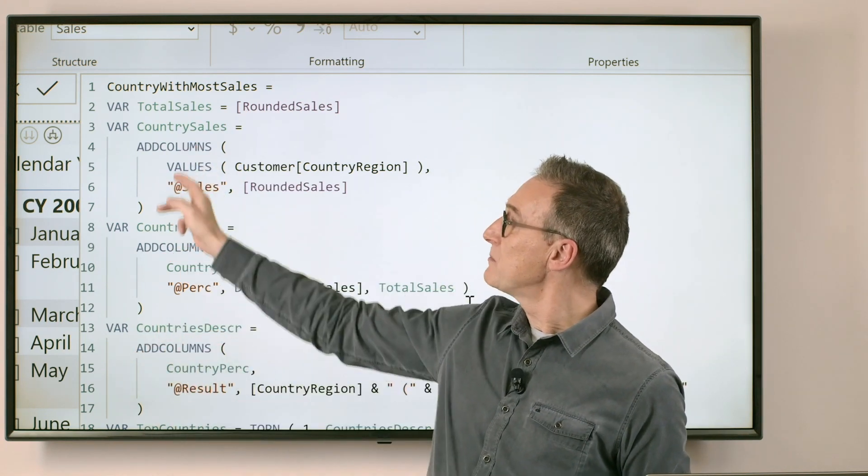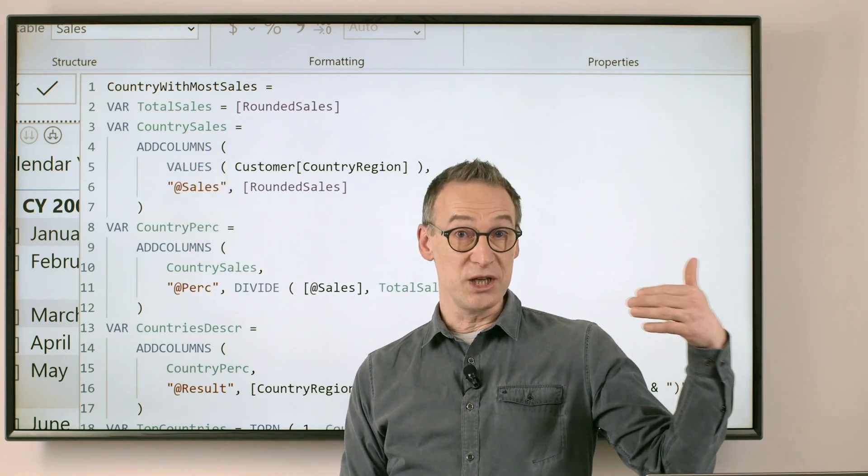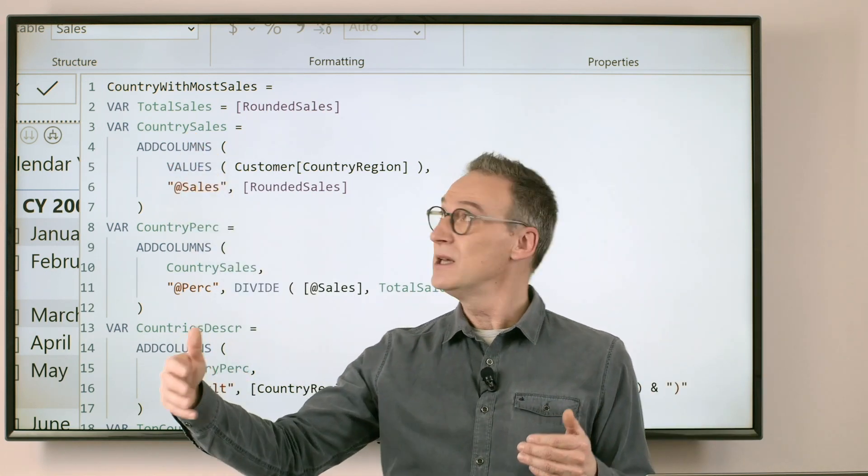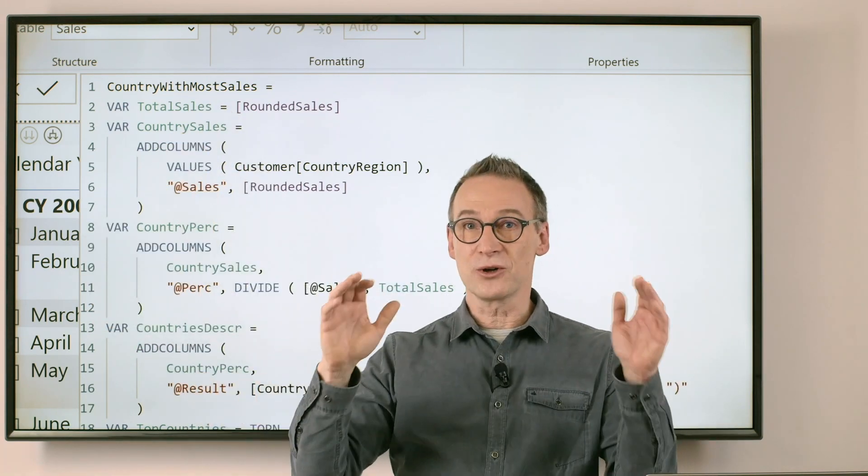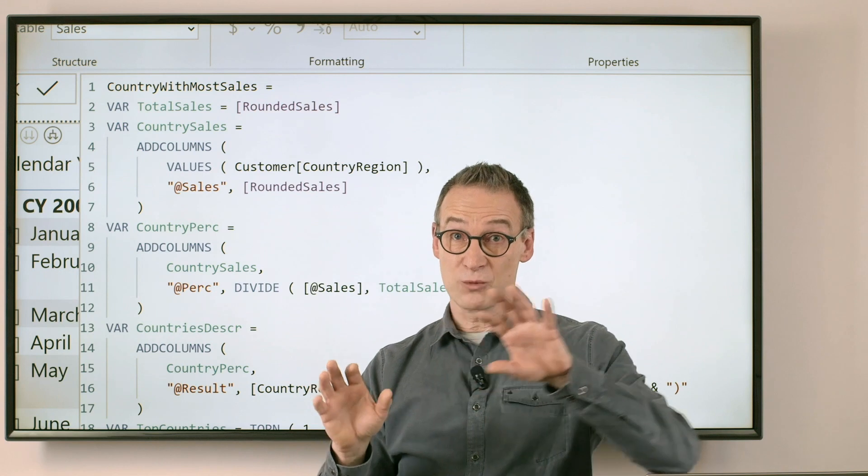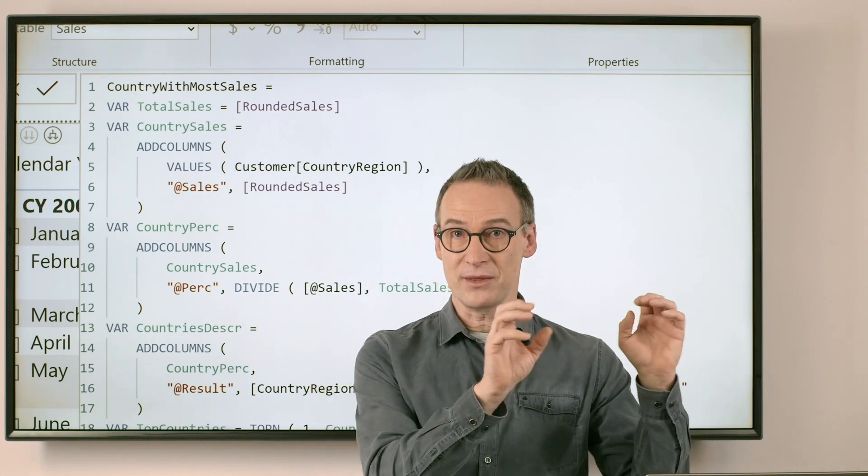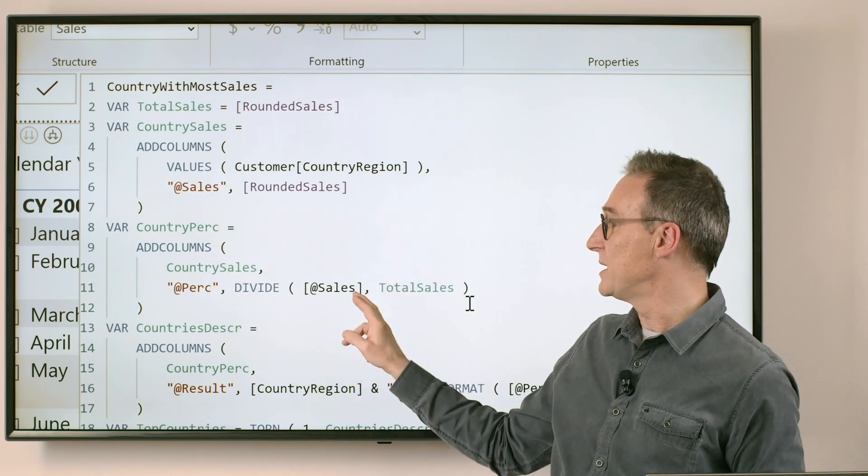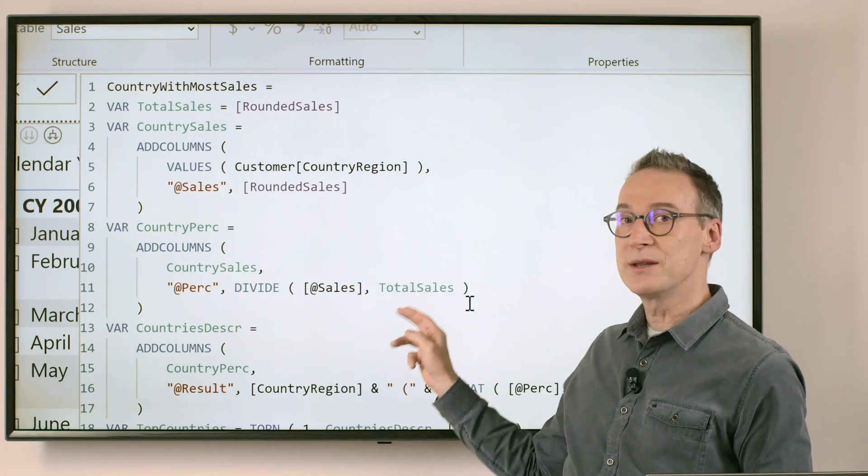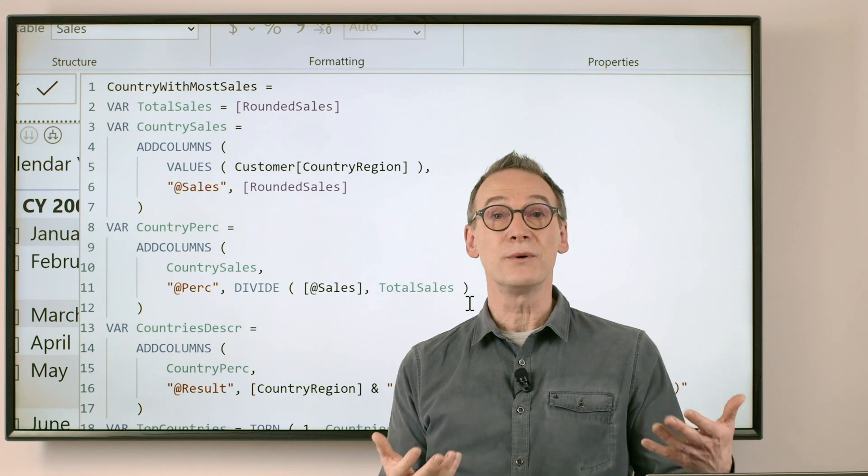Then we create a temporary table, country sales, which contains for each country the sales amount. So total sales is the grand total, and country sales is the total country by country. Remember, we are still speaking about a given month. Then we transform these sales into a percentage, dividing the sales country by country by the total sales.